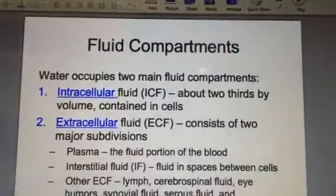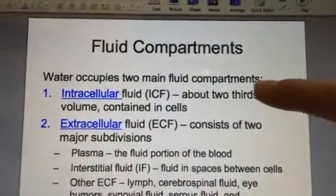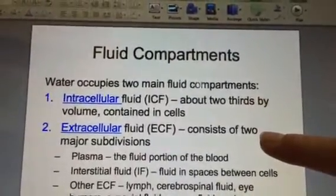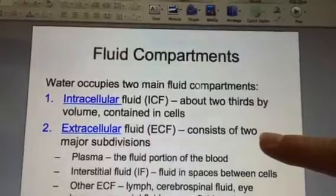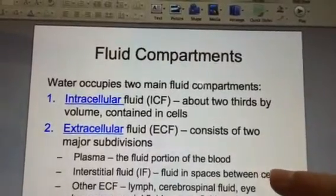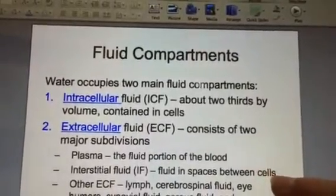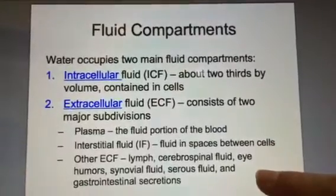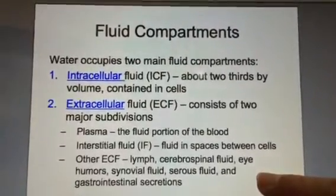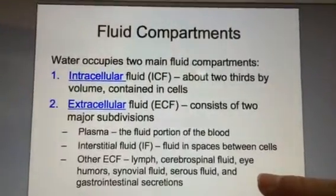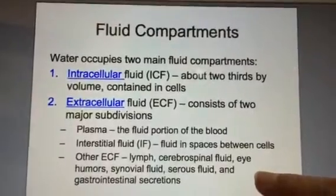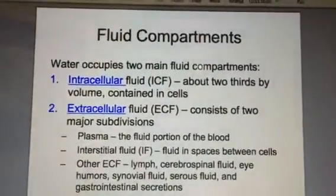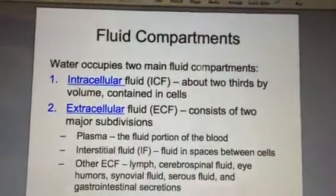Our fluid in our body is stored in two places: it's inside our cells, and the rest is outside of the cells. That includes blood plasma, the fluid between the cells, and also your lymph, eye fluid, cerebrospinal fluid in your spine, and gastrointestinal fluids. So this accounts for where a lot of our water goes.